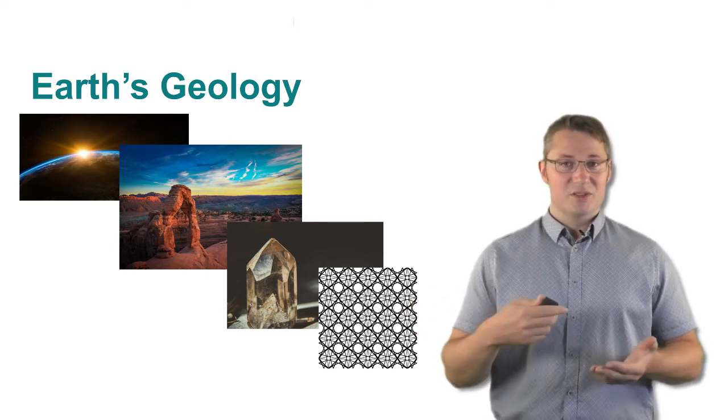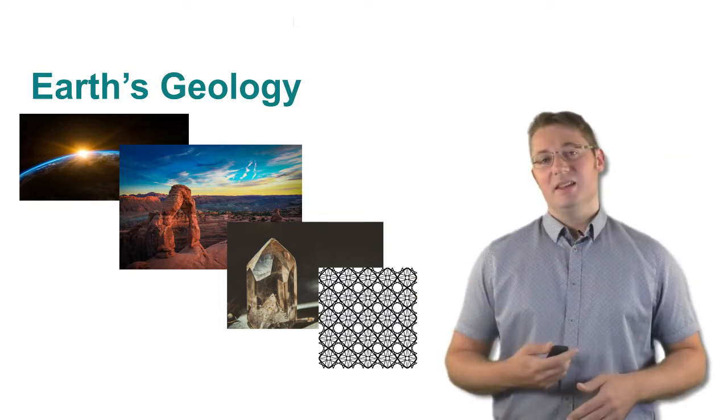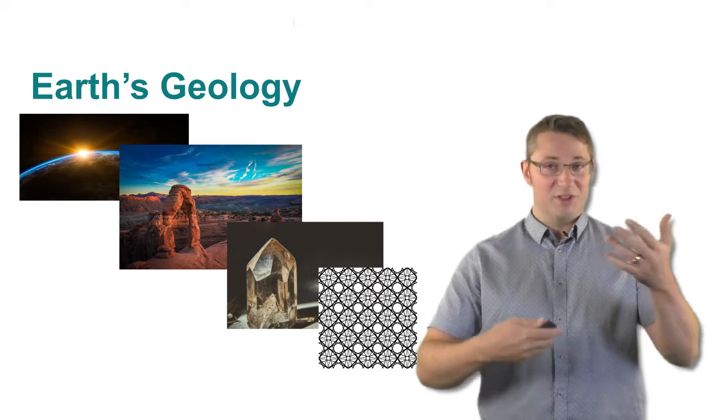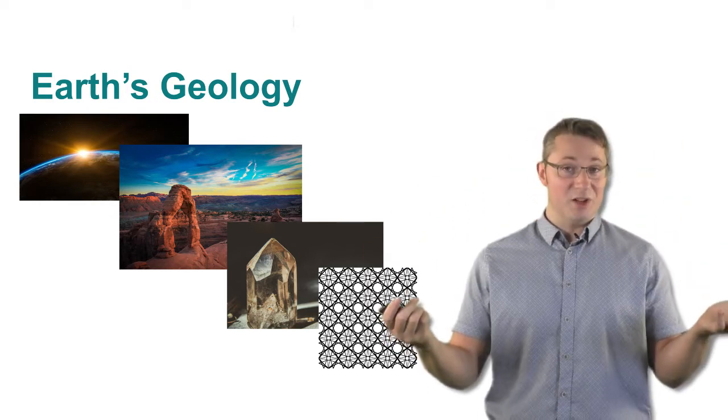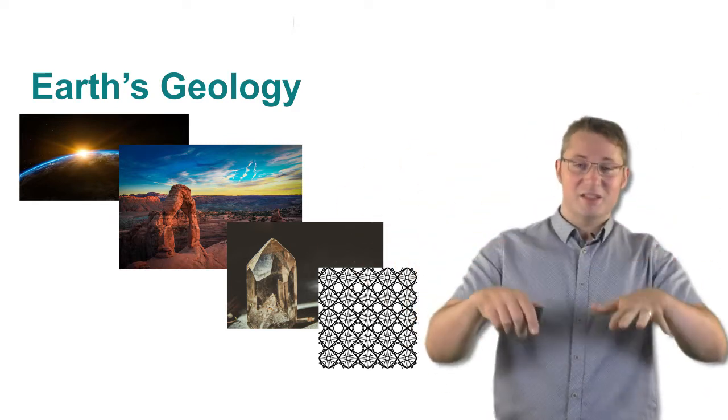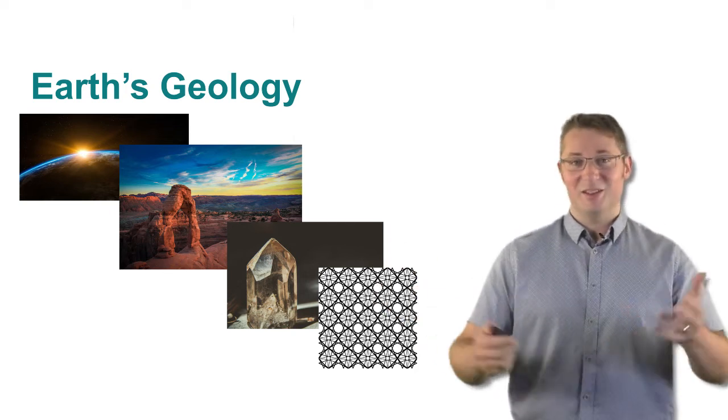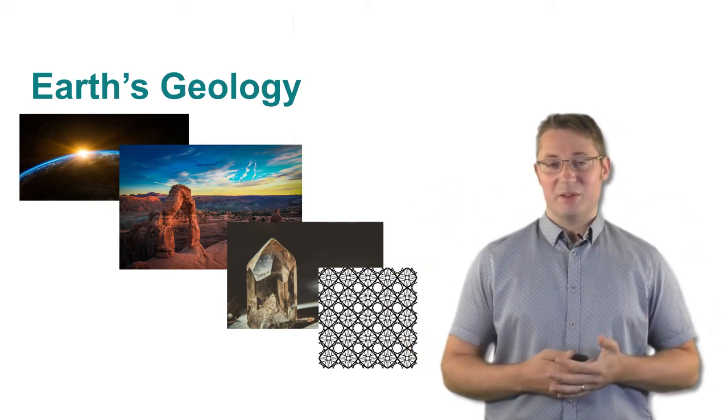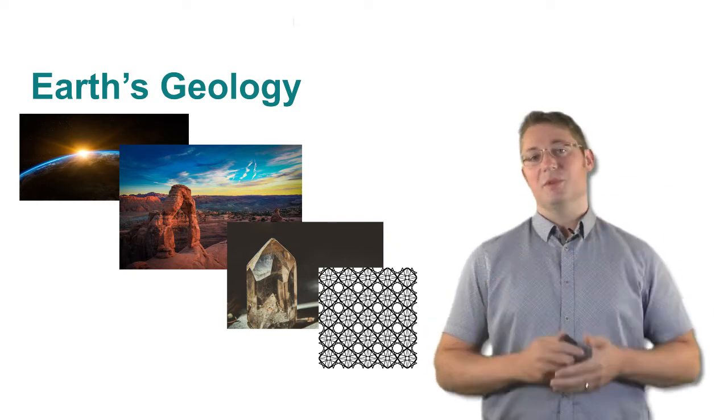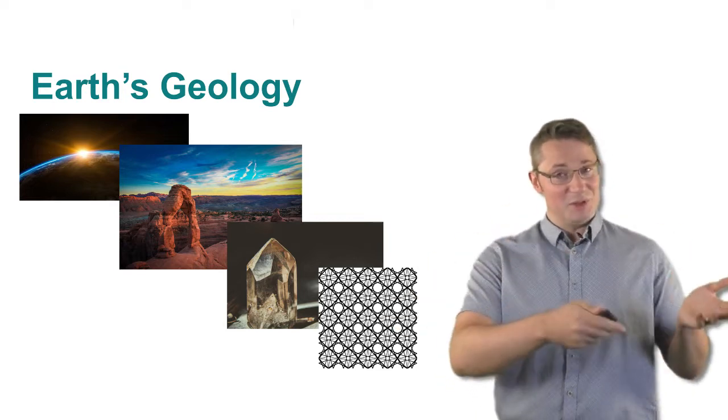It includes any interaction that solar flare particles or charged particles are having on the upper atmosphere. It includes the composition structure and overturning and transport of material in the atmosphere itself going from the surface of the planet up into space. And we come back down to Earth. It includes rocks. It includes water. It includes all of the dynamic processes going on around us. When we zoom in on those rocks, it includes the minerals that make up those rocks. And when we zoom in on those minerals, it includes the atoms that make up those minerals.